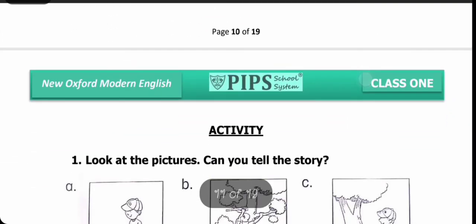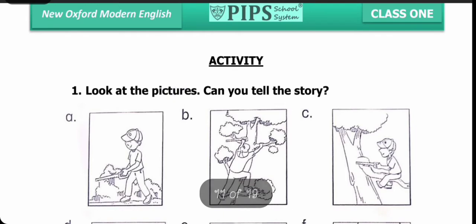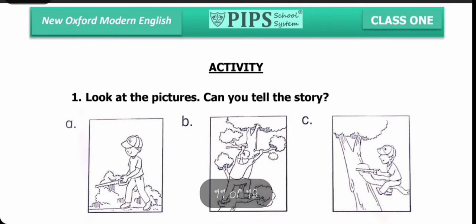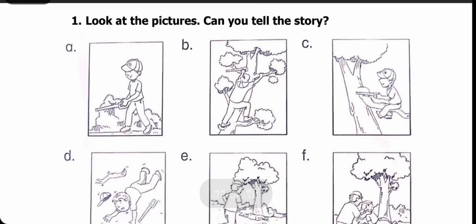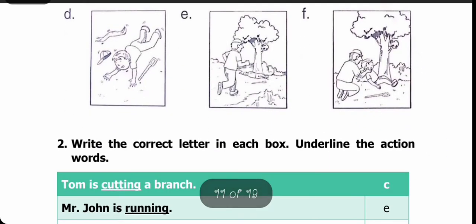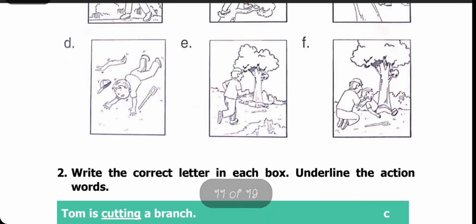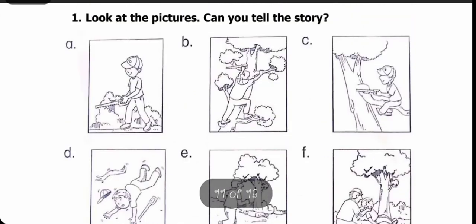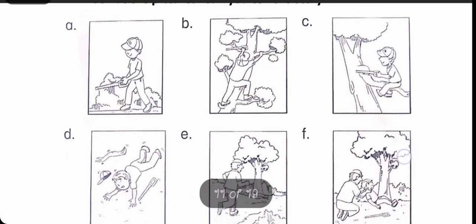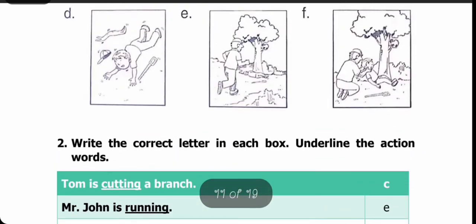Fill in the blanks complete karne ke baad hamari activity hai, aur yeh activity hamari workbook se hai. Look at the pictures — can you tell the story? In pictures ko dekhna hai aur story batani hai. Story neeche write ki gayi hai. Yeh statements hain jo action A, B, C, D, E aur F mein perform ho rahe hain. Humne inko arrange karke saamne dikhna hai — unke saamne unki numbering write kar deni hai.